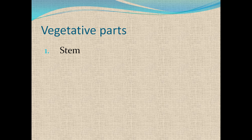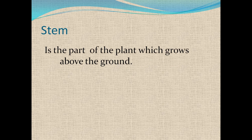The vegetative part further consists of three parts: number one, the stem; root; and leaf. The stem is the part of the plant which grows above the ground.